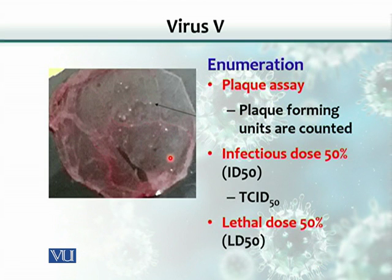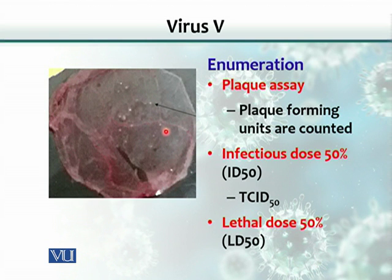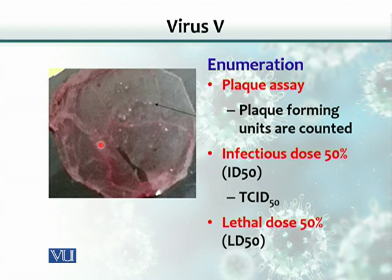Embryonated hen eggs can also be used for counting viruses. The white spots visible here are called pock lesions or plaques. These plaques are equivalent to bacterial colonies on an agar plate — each pock lesion represents one virus. Originally, one virus at that site gave rise to the pock lesion, so counting these lesions gives the number of viral particles.